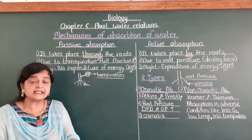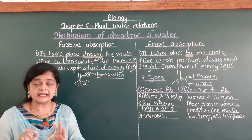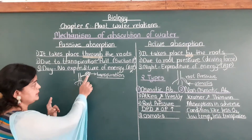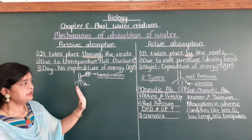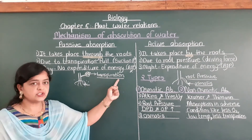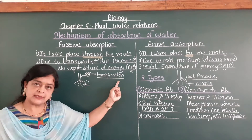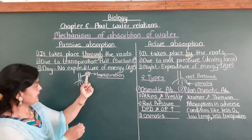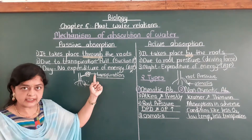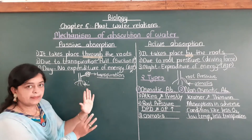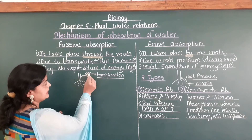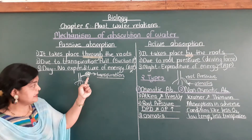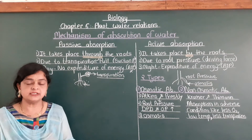It occurs only because of the suction pressure. Suppose this is a plant with roots and a leaf. What happens during daytime is transpiration takes place. Transpiration is nothing but loss of water in the form of vapor. Through the stomata, loss of water takes place, so inside the leaf there will be a deficiency of water.